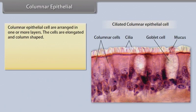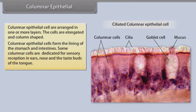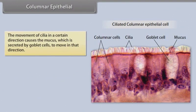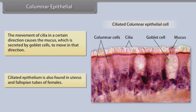Columnar epithelial cells are arranged in one or more layers; the cells are elongated and column shaped. They form the lining of the stomach and intestines. Some columnar cells are dedicated for sensory reception in ears, nose, and the taste buds of the tongue. If columnar epithelial cells possess cilia — fine hair outgrowths — they are called ciliated columnar epithelium. The movement of cilia causes mucus, secreted by goblet cells, to move in a certain direction. Ciliated epithelium is also found in the uterus and fallopian tubes of females.